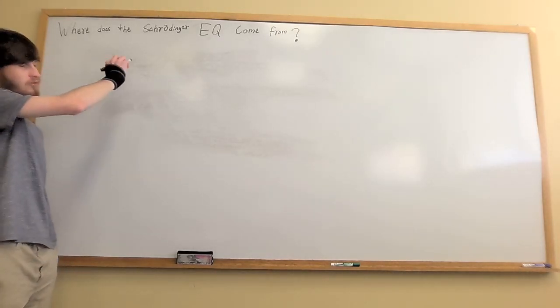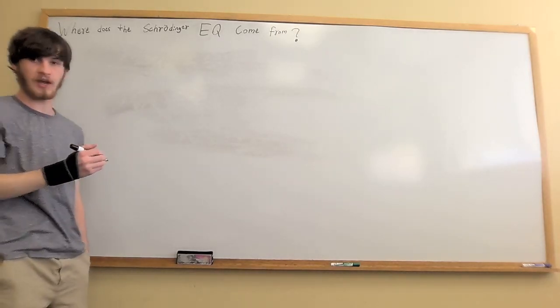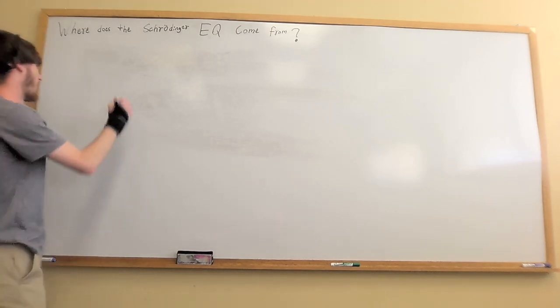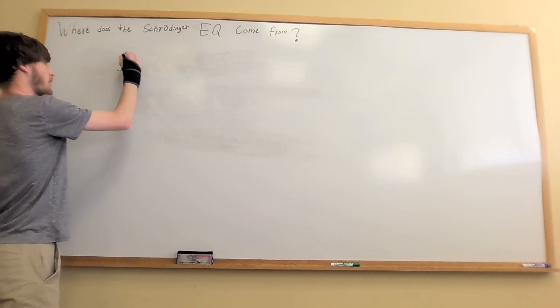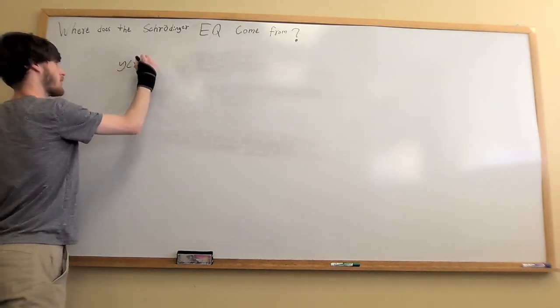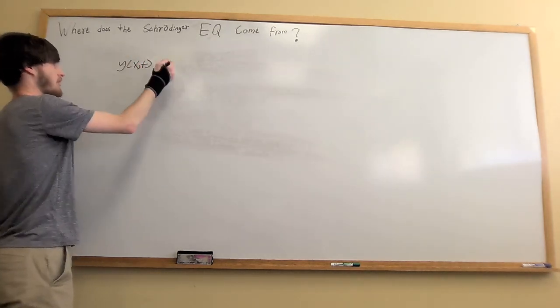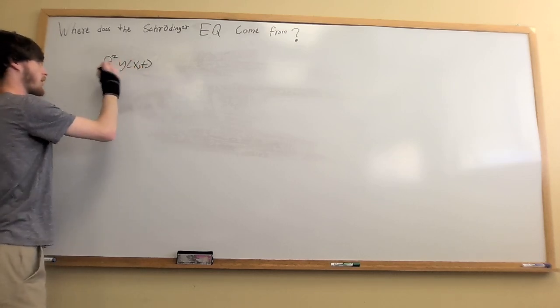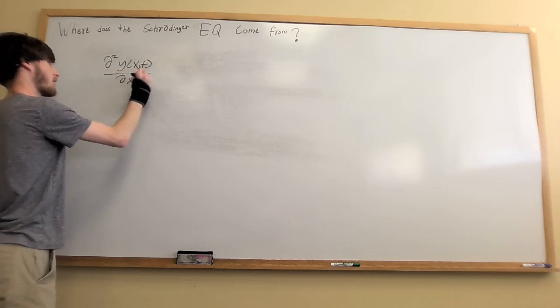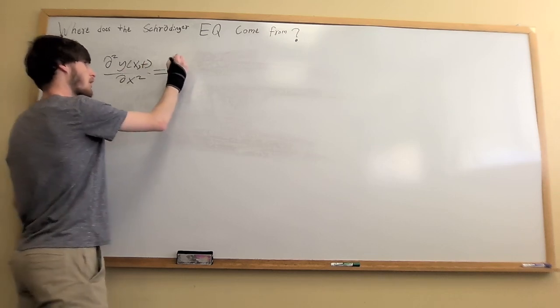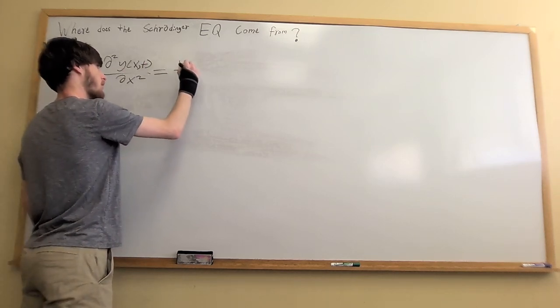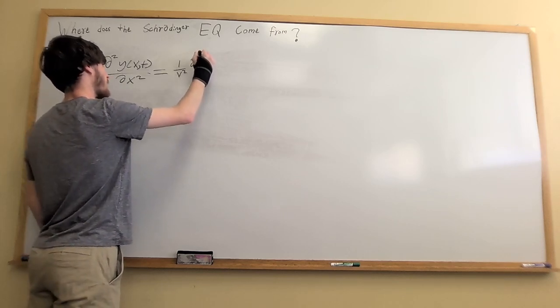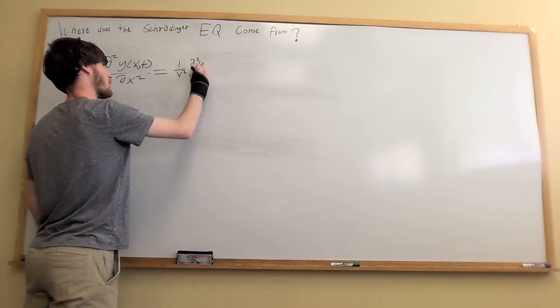So where does the Schrödinger equation come from? We start with the mechanical wave equation for strings or EM waves. We'll call it y of x and t. The wave equation goes partial squared y partial x squared equals 1 over v squared, which is the speed of the wave squared, times partial squared y partial t squared.